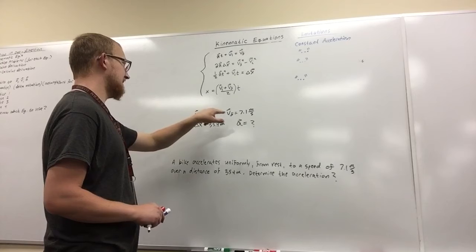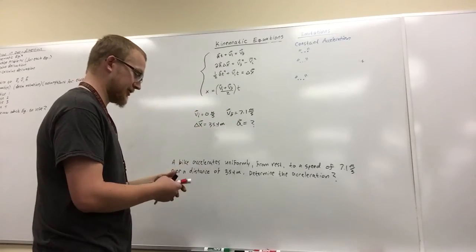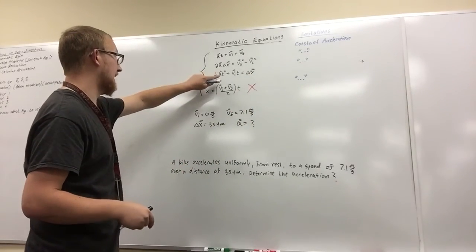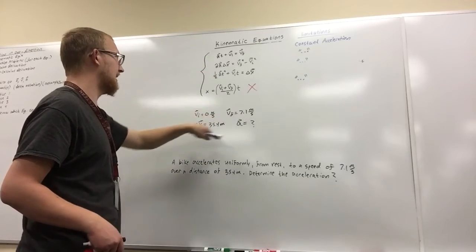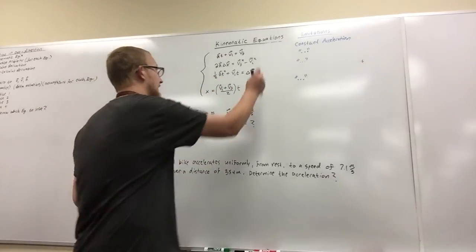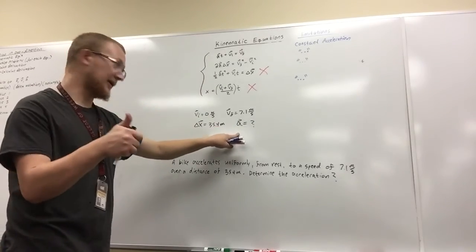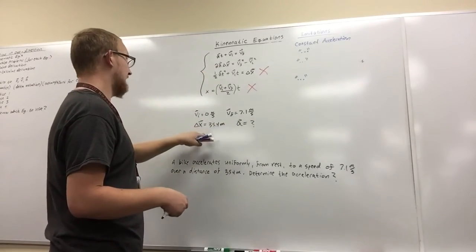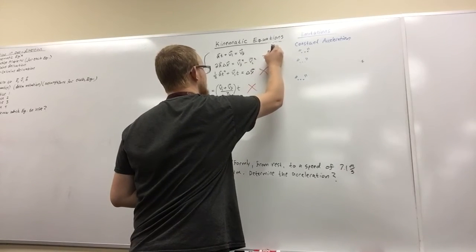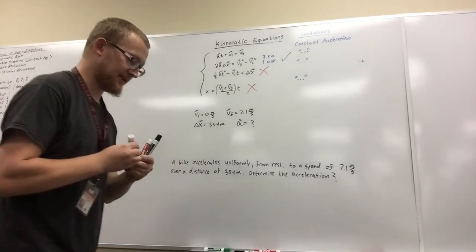Looking at our kinematic equations: the first one has v initial, v final, and x, but no acceleration — can't find what we're looking for. The second equation has acceleration but no time and doesn't use v final, so we eliminate it. The third equation has acceleration (what we're looking for), delta x (known), v final (known), and v initial (known). That's three knowns and one unknown — let's use this equation.